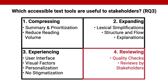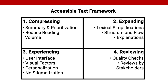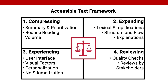Several experts also commented on tools that act as a quality check. Regarding review of text, experts commented on the importance of reviews by the target group. We combine the different accessible text tools proposed by experts into the so-called accessible text framework. This framework helps designers and researchers to develop accessible text tools in practice. The framework illustrates the tension between compressing and expanding text, and outlines how tools that facilitate experiencing and reviewing text can help designers and developers overcome these tensions. As highlighted by the symbol of a scale, the components of the accessible text framework need to be balanced.